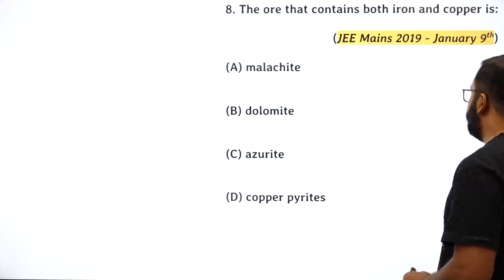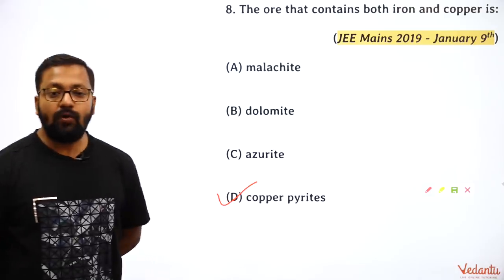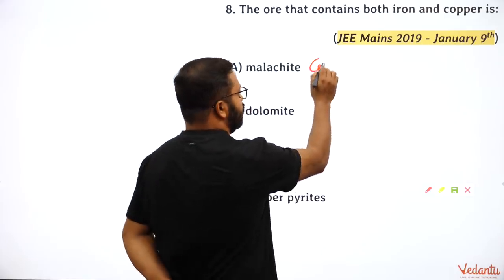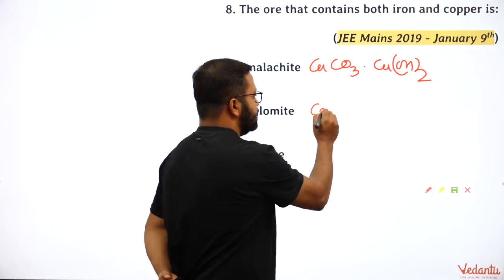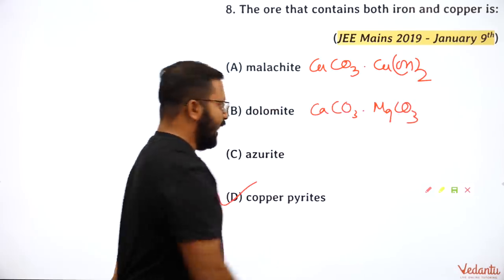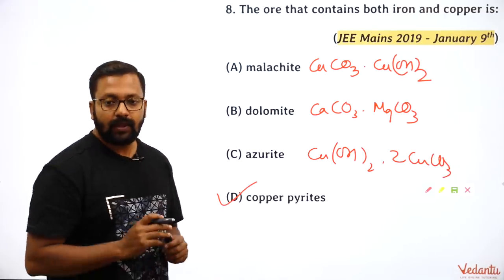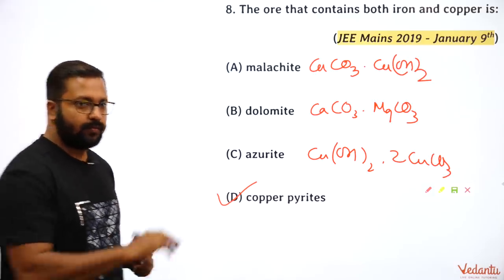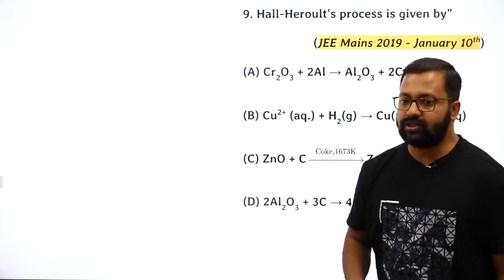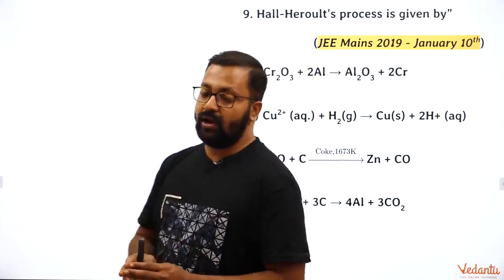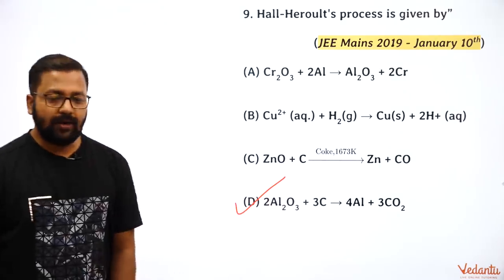The ore that contains both iron and copper: the answer is copper pyrite, CuFeS₂. Malachite is basic copper carbonate — Cu₂(CO₃)(OH)₂ (malachite green). Dolomite is CaCO₃·MgCO₃. The Hall–Héroult process (JEE Mains 2019) is used for extraction of aluminium, so the option containing aluminium is the right answer — option D.